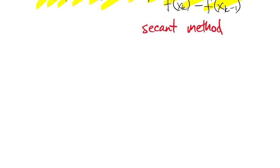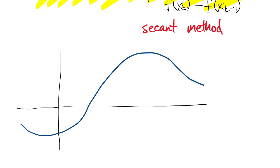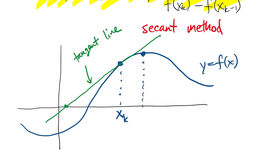This is a very simple picture that goes with this. If we have our original function, y equals f(x), Newton's method says at the current point, use the tangent line and find the x-intercept of that. Well, when you draw a line through two points on a curve, that's what we call a secant line. And so the secant method uses the secant line instead of the tangent line.